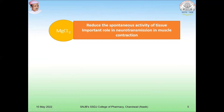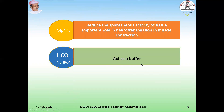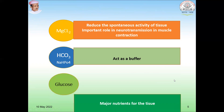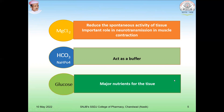Another component is magnesium chloride. It reduces the spontaneous activity of the tissue and plays an important role in neurotransmission and muscle contraction. Then bicarbonate acts as a buffer, maintaining the pH of the solution, which is important. Then glucose — it is a major nutrition source for the tissue, providing energy as well as nutritional supplementation to the tissue.